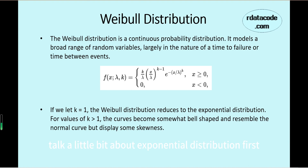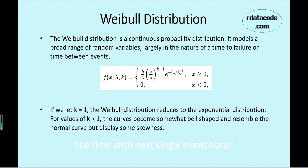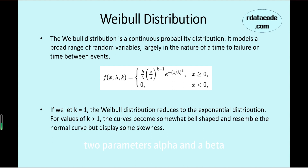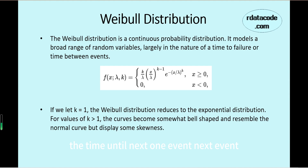Here we talk a little bit about exponential distribution first. Exponential distribution is used to model the time until the next single event occurs. This event is called a Poisson event, and this process is called a Poisson process. Exponential distribution is actually a special case of a gamma distribution. Gamma distribution has two parameters, alpha and beta, and exponential distribution is a gamma distribution with alpha equals 1, meaning the time until the next event.